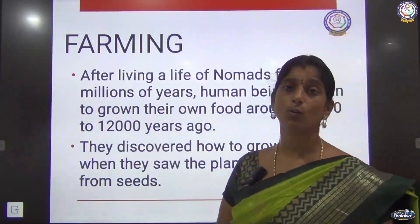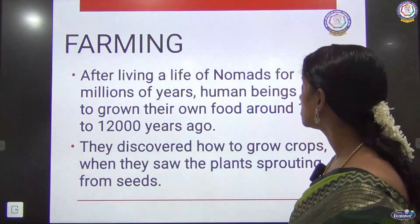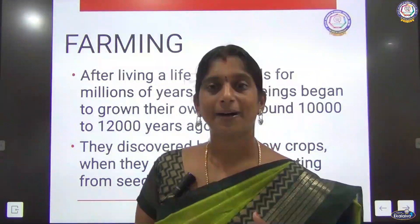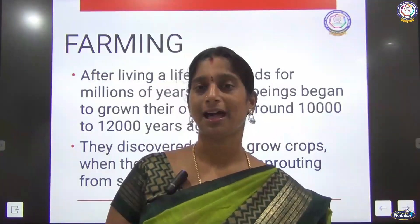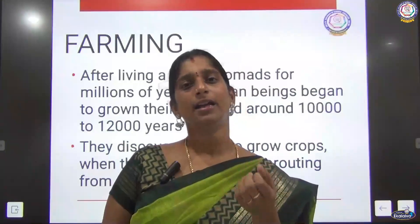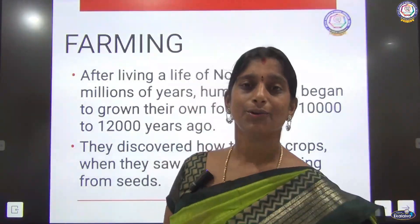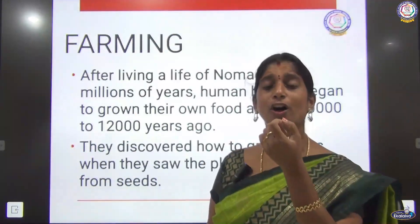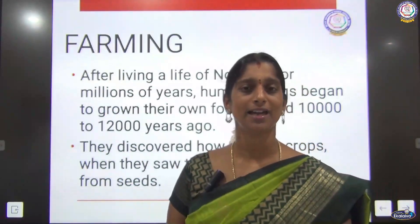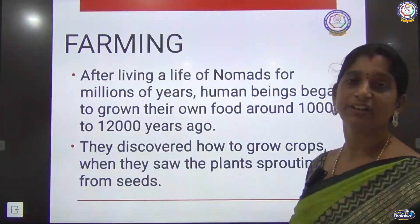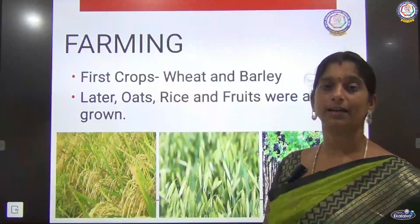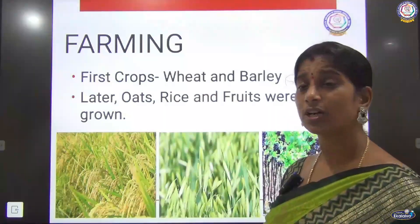They were living the life of nomads for millions of years, and then they began to grow their own food about 10,000 to 12,000 years ago. They discovered how to grow crops by seeing normal grains sprouting into plants. We know that seeds or grains, when soaked in water or buried in sand, start growing a new plant. By seeing that a grain can sprout and a plant will start growing from it, they understood they could farm by themselves. The first crops grown by them were wheat and barley.